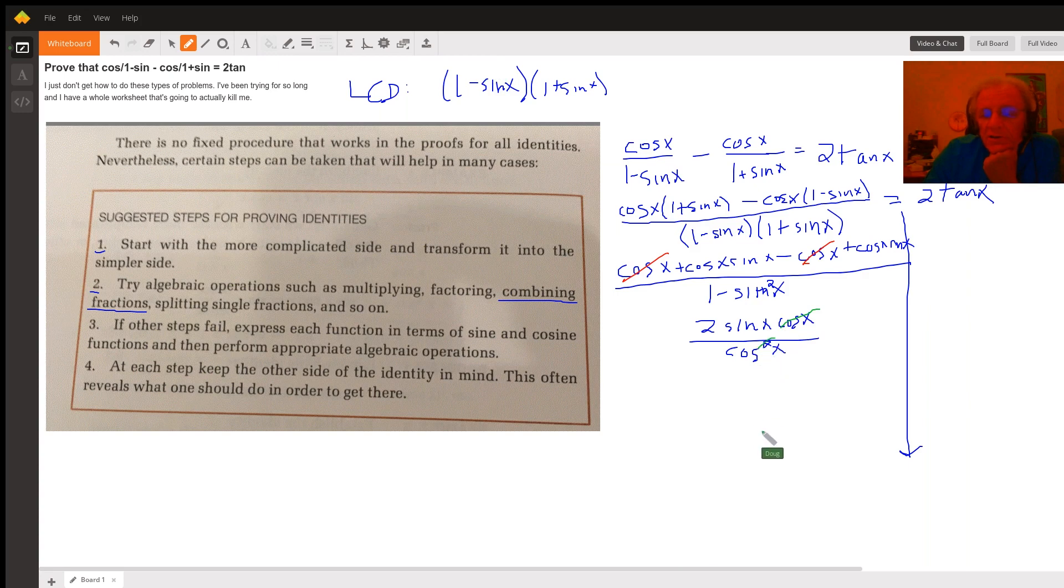I'll kind of do it this way. That results in two sine of X over cosine of X. But now we have another trig identity that says sine over cosine is tangent. So we have arrived at where we were headed.